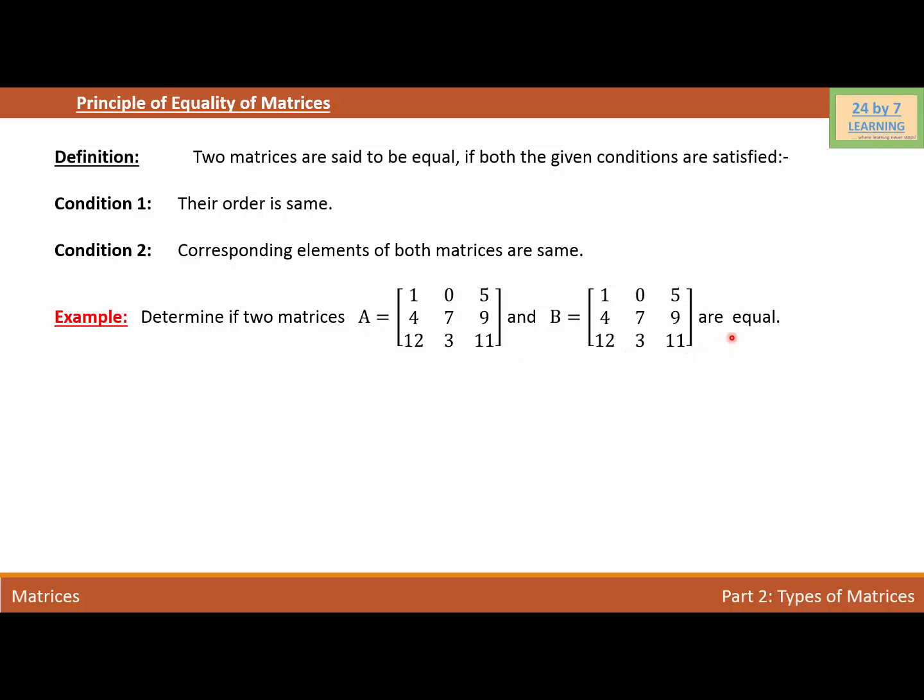So let's check for the first condition. As you can see, the order of matrix A is 3 by 3 because matrix A has 1, 2, 3, three rows and 1, 2, 3, three columns.